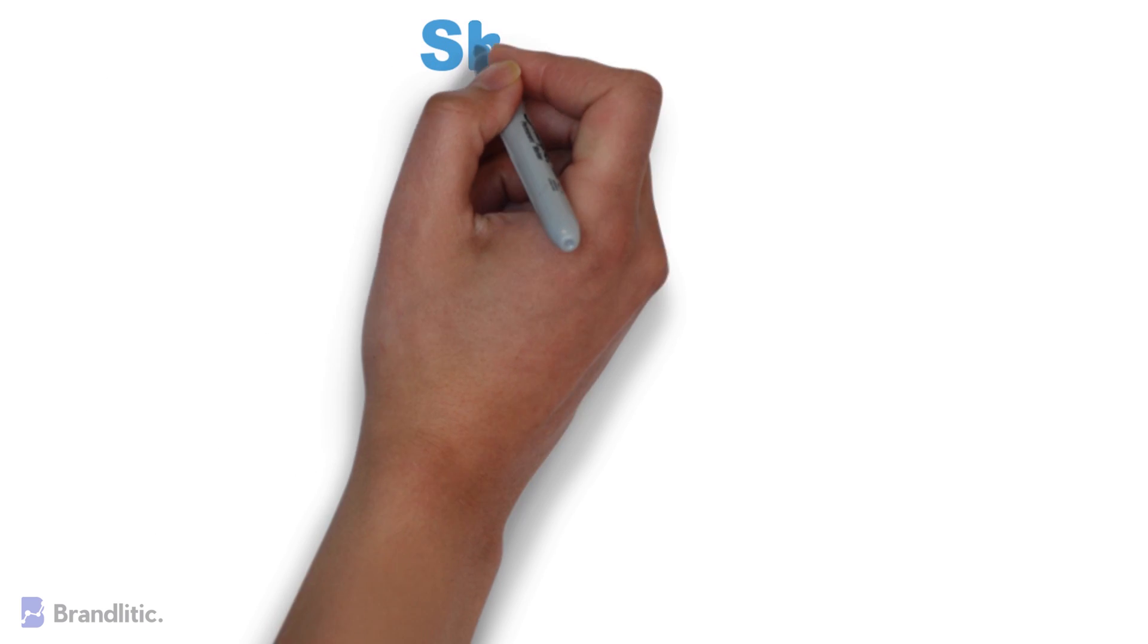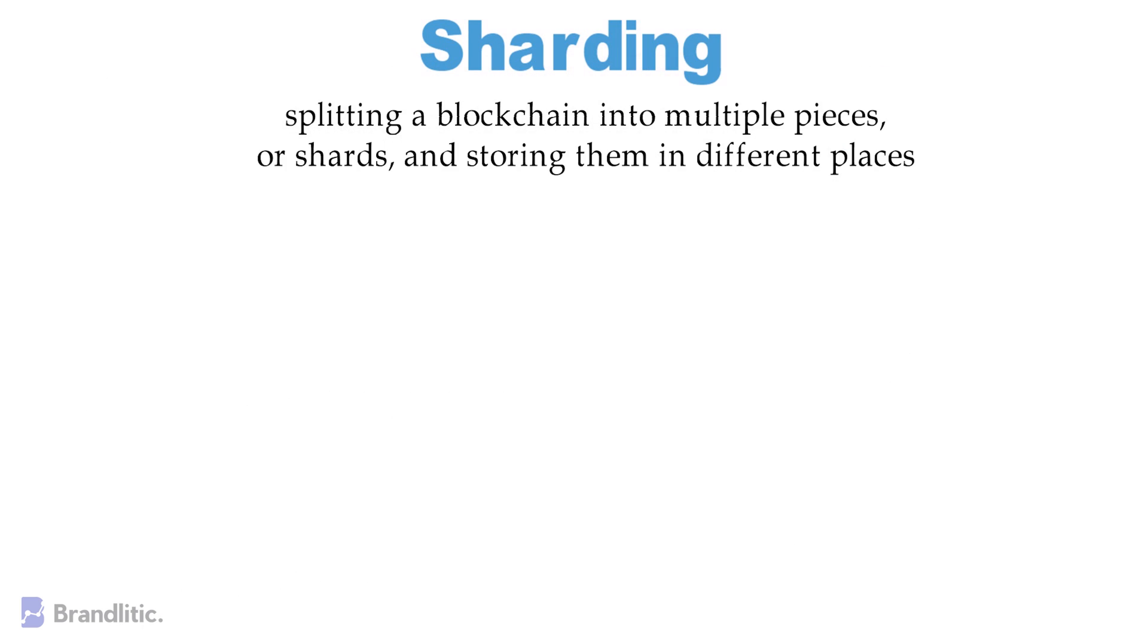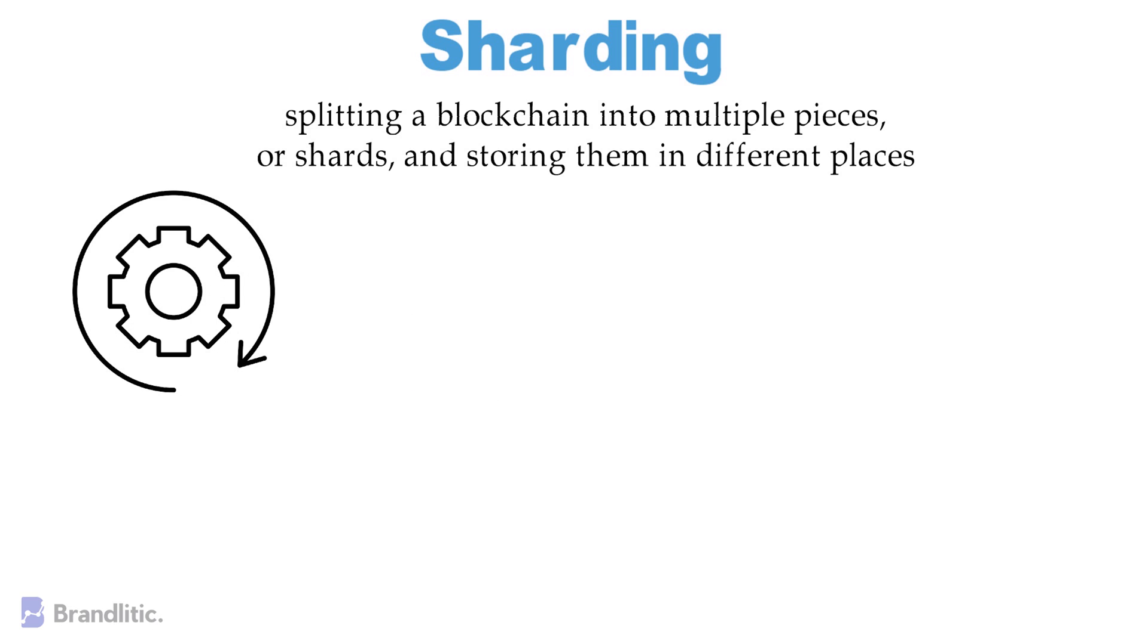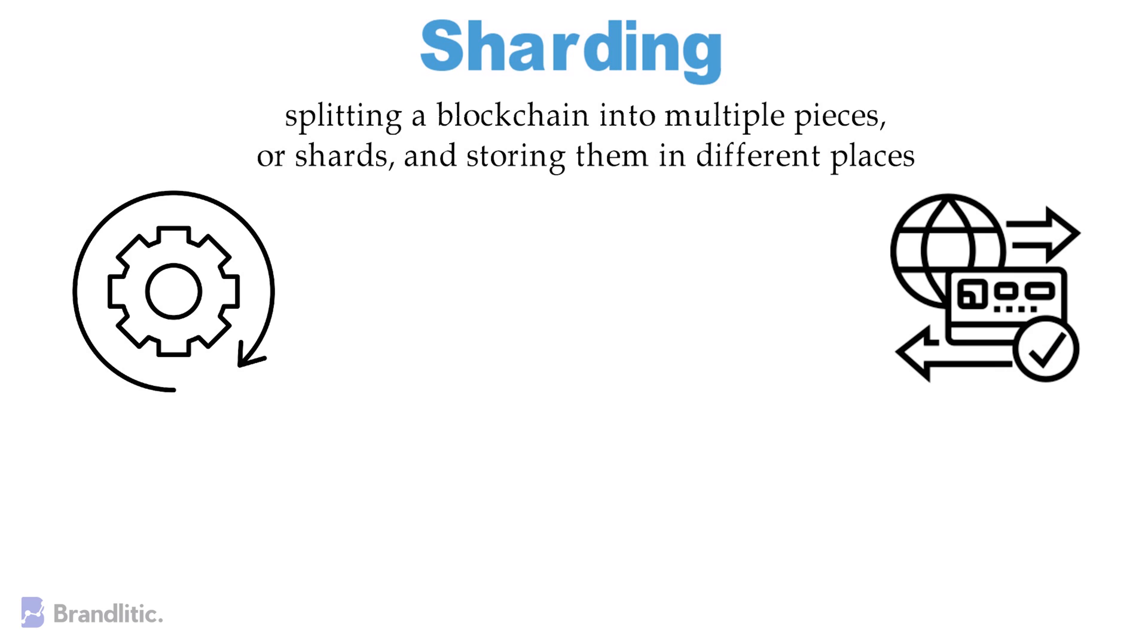To state simply, sharding involves splitting a blockchain into multiple pieces or shards and storing them in different places. By storing the data across different computers, the computational burden on each can be reduced. This allows the network to process a larger volume of transactions at a much faster rate.